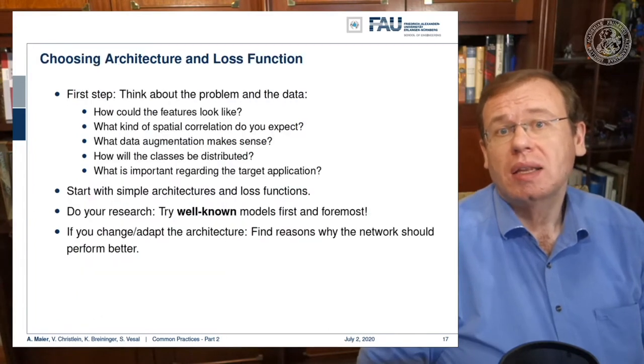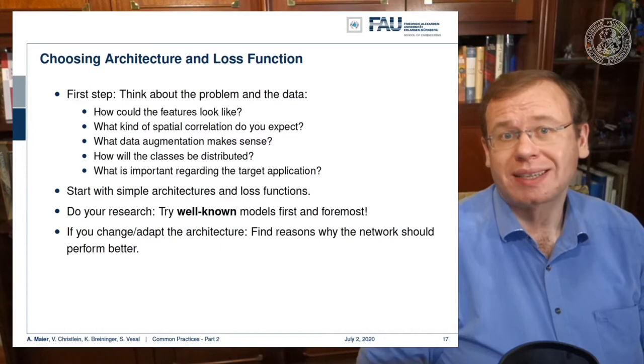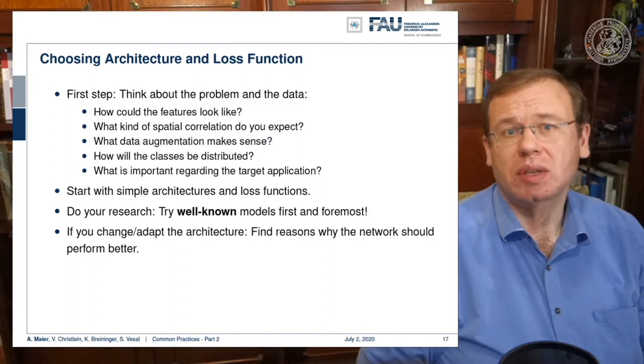Let's choose an architecture and a loss function. The first step would be to think about the problem and the data. How could features look like? What kind of spatial correlation do you expect? What data augmentation makes sense? How will the classes be distributed? What is important regarding the target application? Then you start with simple architectures and loss functions.